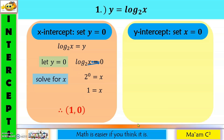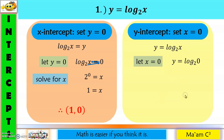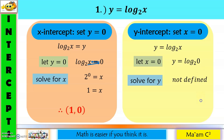For the y-intercept, set x equal to zero. In logarithms, the value of the argument must be greater than zero, but here the argument equals zero. Therefore, the logarithm is not defined, and we do not have a y-intercept.